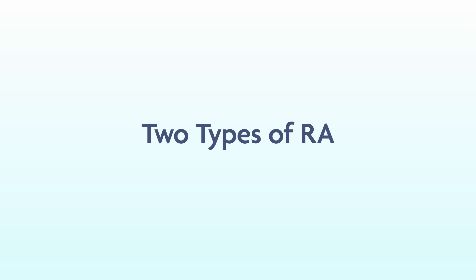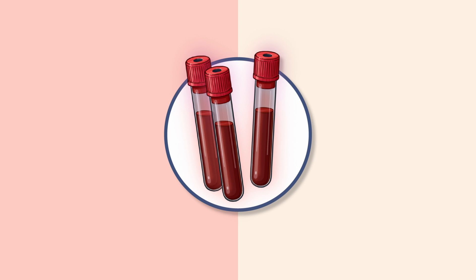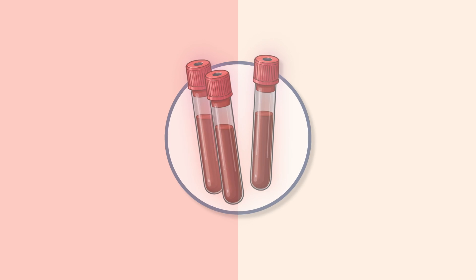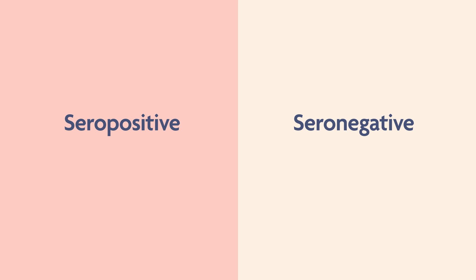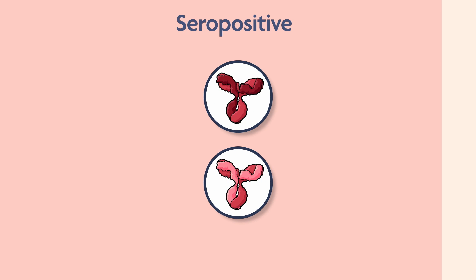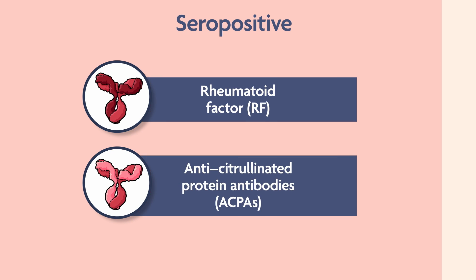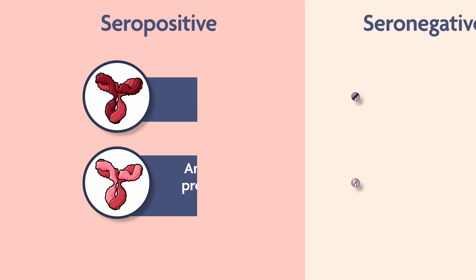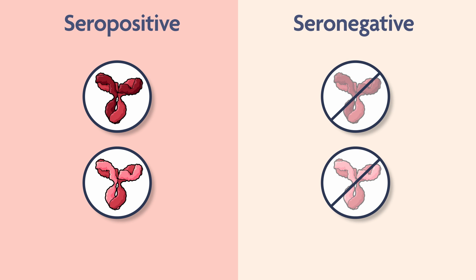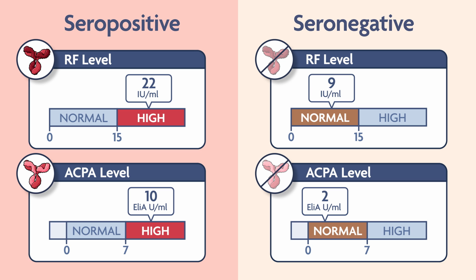There are two different types of RA. To determine which type a patient might have, a physician will order serum laboratory tests. RA is divided into seropositive and seronegative. To see if the patient is seropositive, we look for the presence of autoantibodies, including rheumatoid factor and anti-citrullinated protein antibodies, or ACPAs. Rheumatoid factor and ACPAs are not found in seronegative individuals.